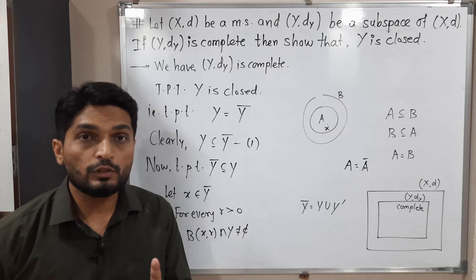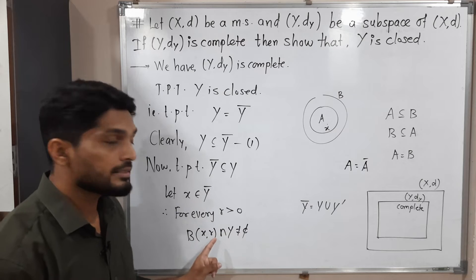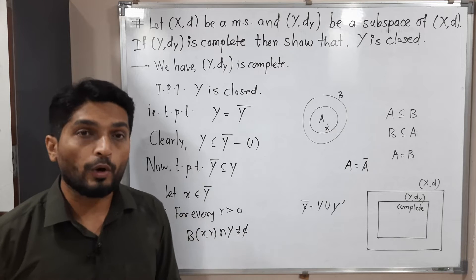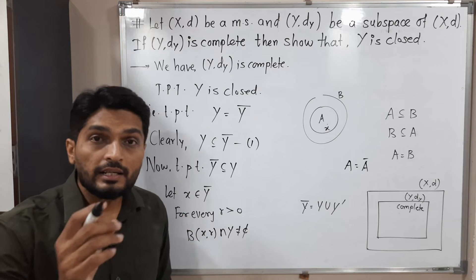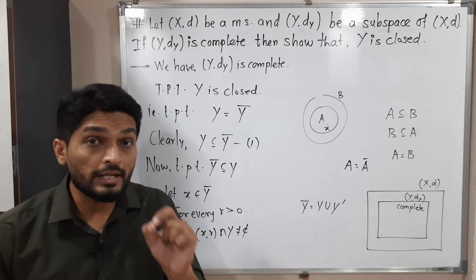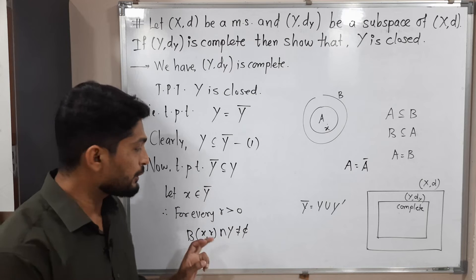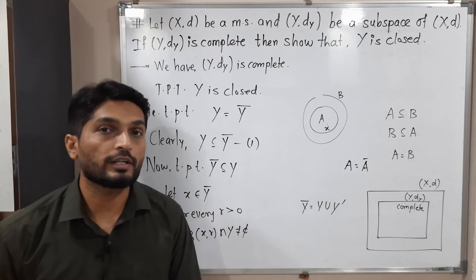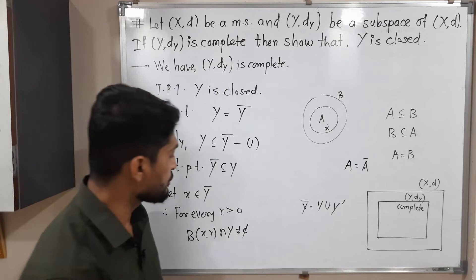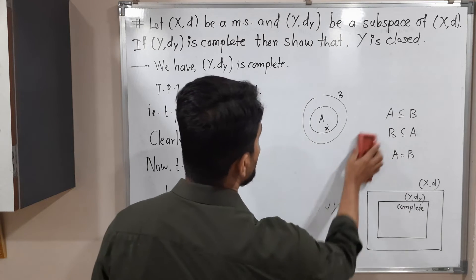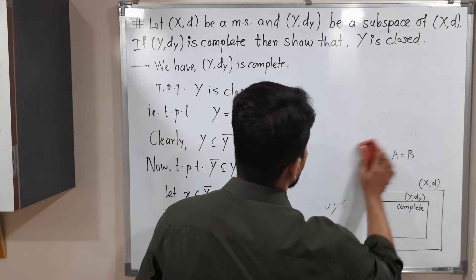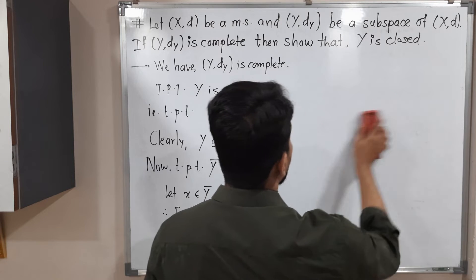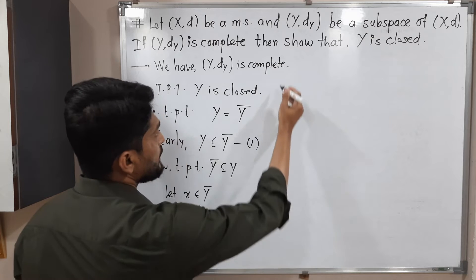There is one more definition involving limit points — in the definition of a limit point we remove the singleton {x}, we remove the center of that ball. But here we do not remove the center of the ball and simply write B(x,r) ∩ Y ≠ ∅, and this is true for every r. So let me remove this part to get more space to write.